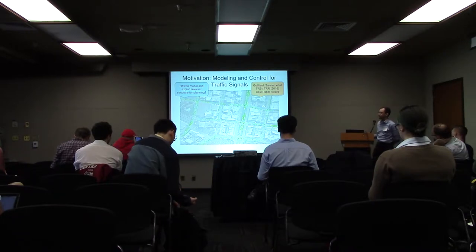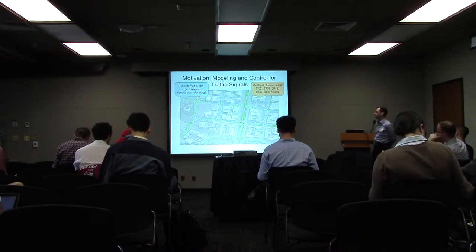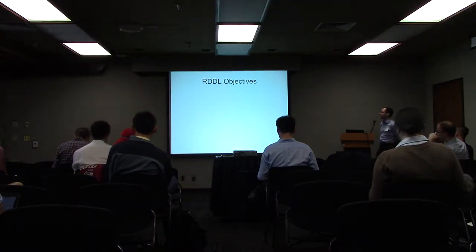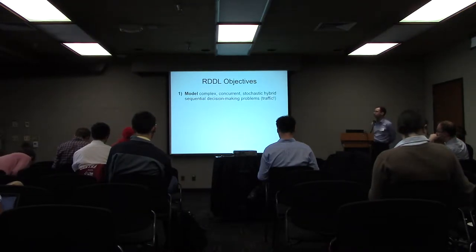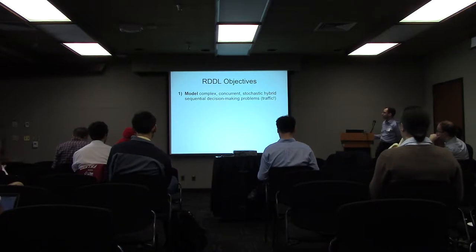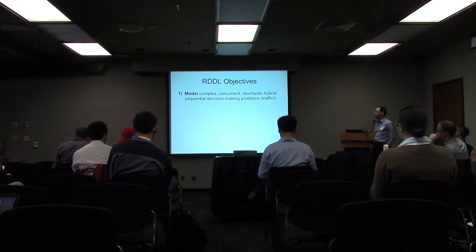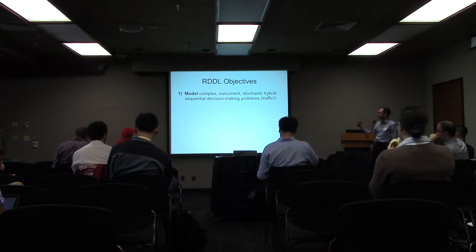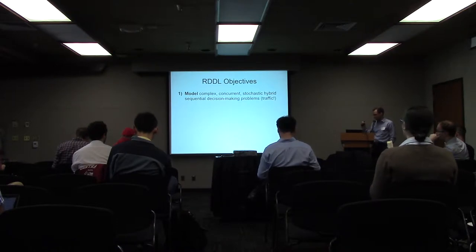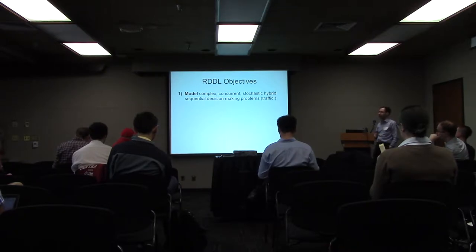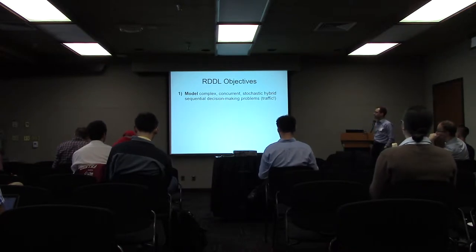So this was my motivation. I didn't want to just model traffic in the end — I want to model a large range of complex problems. The whole purpose of RDDL is to model complex, concurrent problems — like traffic moving concurrently, the lights changing concurrently — stochastic, where you can't predict what people do in traffic. It's hybrid: you model traffic as queue lengths or cars with velocities, so there are continuous and discrete variables. It's sequential because you want to think far ahead — a minute, ten minutes — to plan green waves so cars can just go through.